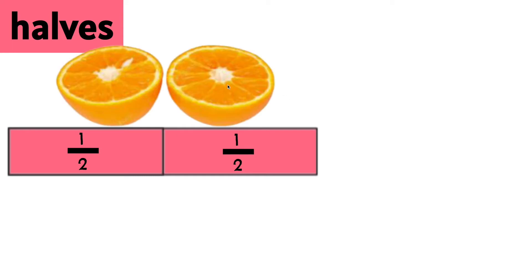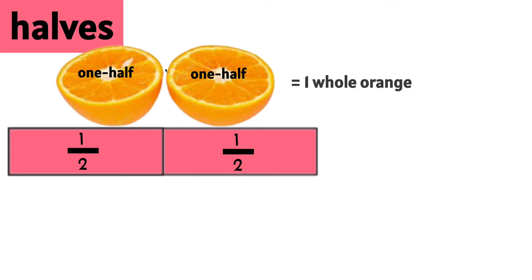Here we have an orange that is split or cut into two equal parts. This is one half of an orange. This is another half of an orange. If we put these halves together we have two halves, which is one whole orange.